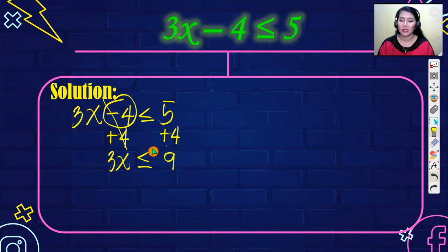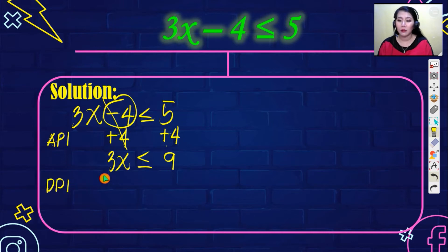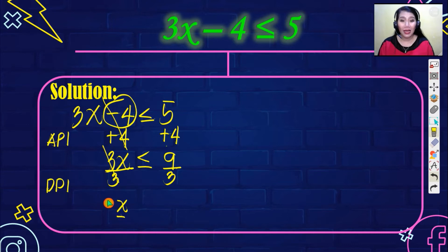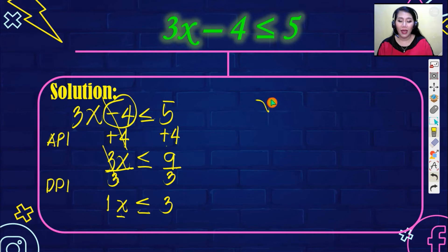You are not yet done — you applied API first. Next, apply DPI because 3 is next to x and the implied operation is multiplication. Divide both sides by 3. 3 divided by 3 is 1, so we simply write x. Therefore, x is less than or equal to 9 divided by 3, which is 3.